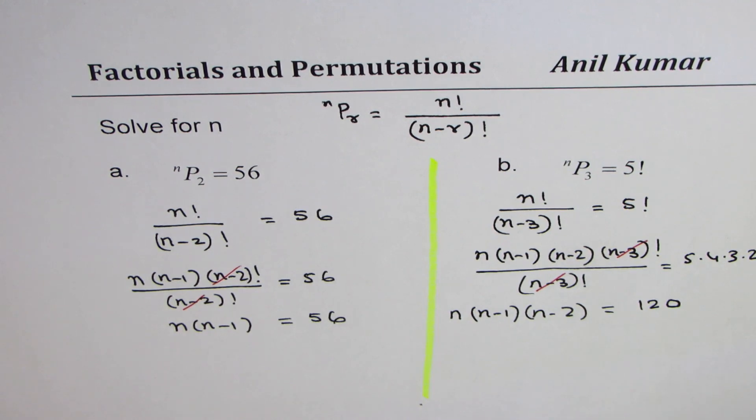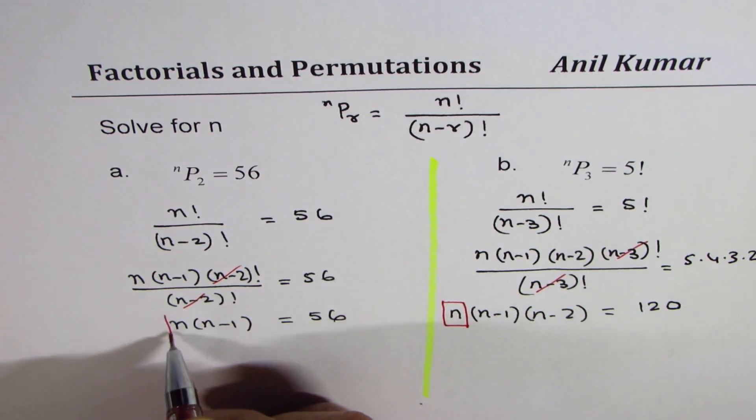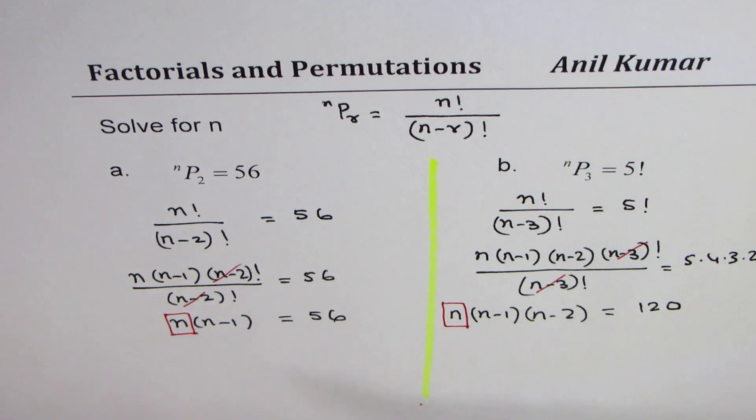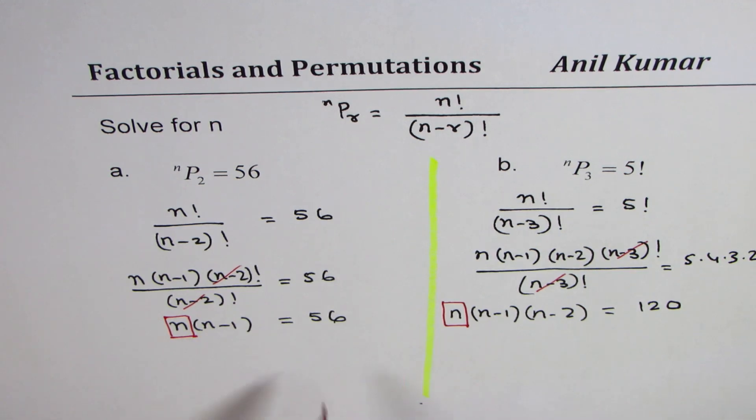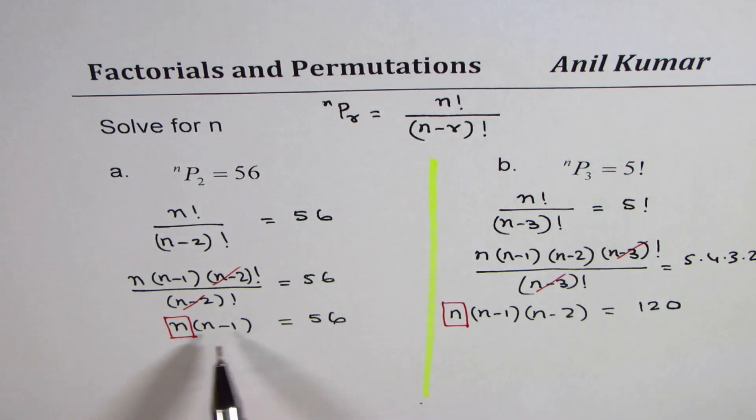Now the question is, how can I solve these equations quickly? I have to find the value of n. The trick here is, we could always solve them - open the bracket, use quadratic formula, factor out - but it's a long process. How do we do it quickly? Here it seems to be simple: 7 times 8, right? You have your answer right there, the bigger number you're looking for.